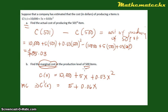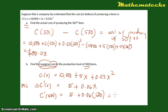At the production level of 500 items, meaning when x = 500, the marginal cost is 5 + 0.06 × 500. Computing this gives us $35. So the marginal cost at the production level of 500 items is $35.